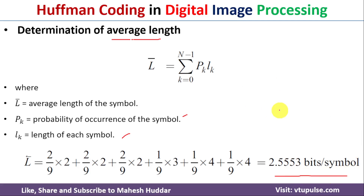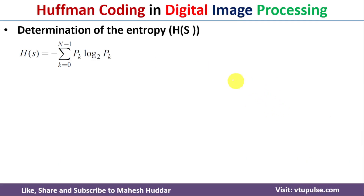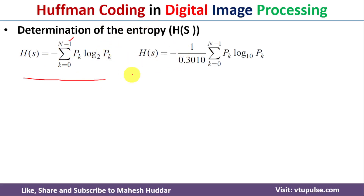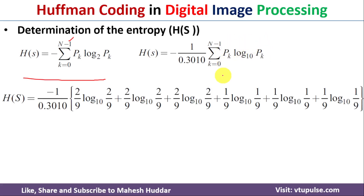Next, we find the entropy using the formula: H(S) = −summation of pk × log₂(pk) for all k from 0 to n−1. To convert log base 2 to log base 10, we divide the equation by 0.3010, giving: H(S) = −(1/0.3010) × summation of pk × log₁₀(pk). Substituting all known probability values, we get the entropy as 2.5034 bits per symbol.